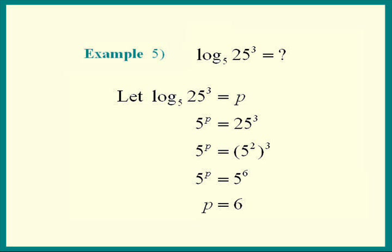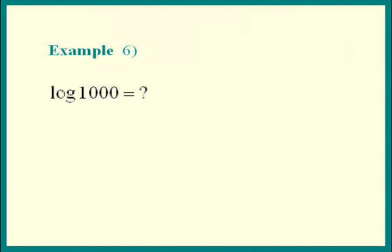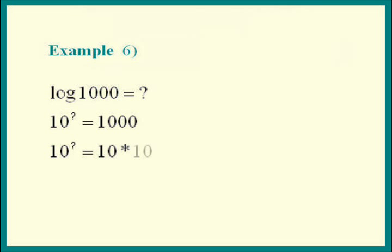Example 6: we see log of a thousand. When you don't see the base, the base is 10. 10 to what power is a thousand? A thousand is 10 times 10, that's 100, times another 10, that's a thousand — so we have 10 cubed. Matching up the powers, the answer is 3.